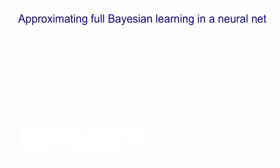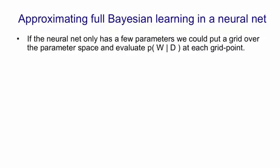So we can approximate full Bayesian learning in a neural net if the neural net has very few parameters. The idea is we put a grid over the parameter space. So each parameter is only allowed a few alternative values and then we take the cross product of all those values for all the parameters and now we get a number of grid points in the parameter space.